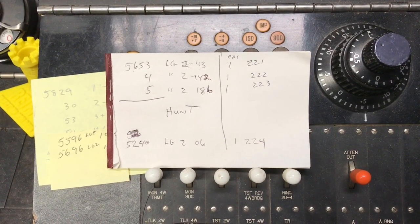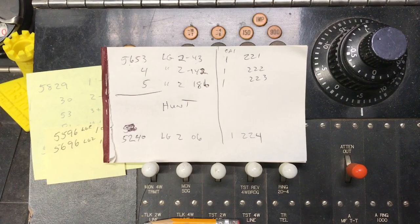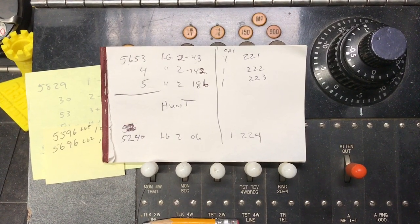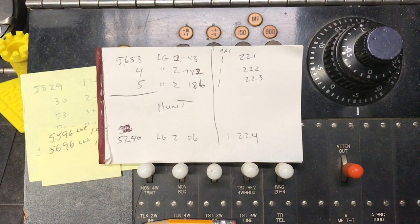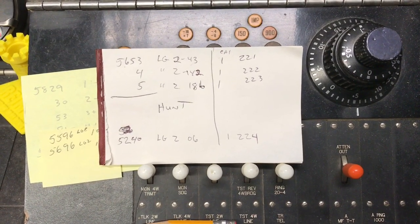The white paper I have here is the phone numbers, the line equipment, and the cable pair that they will be tied to. This information will be transferred over to my cable records book once I'm finished wiring.